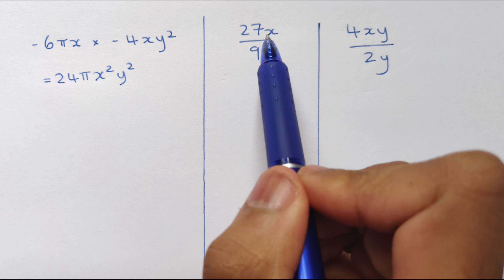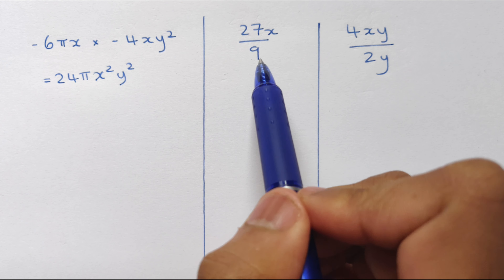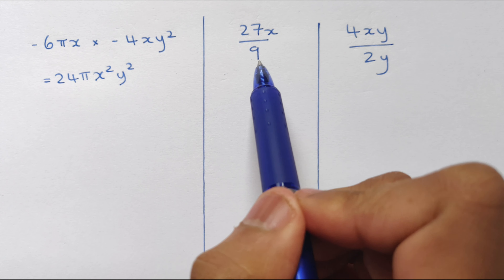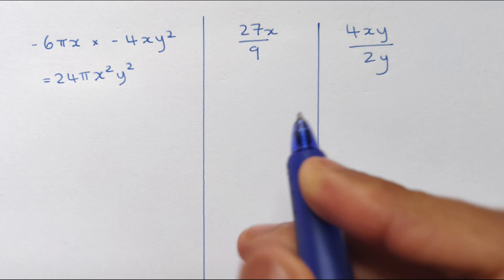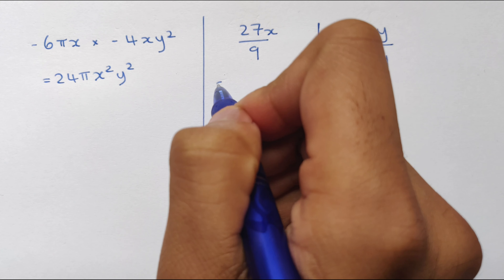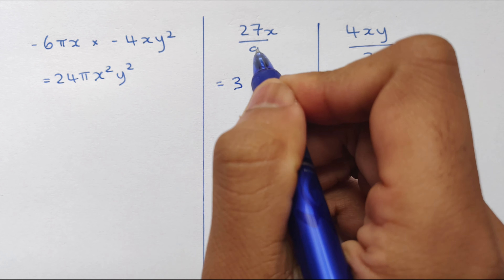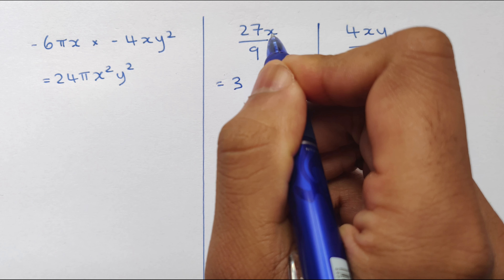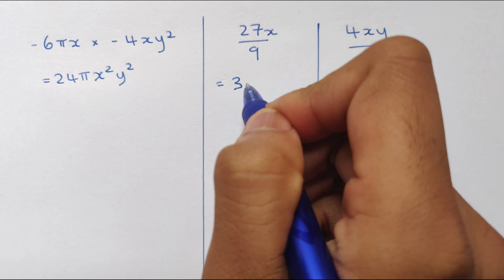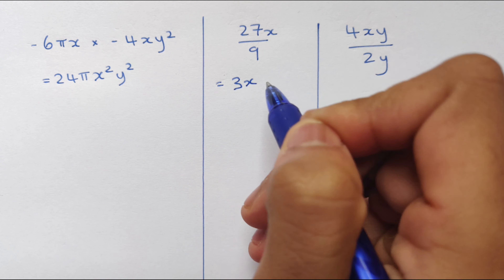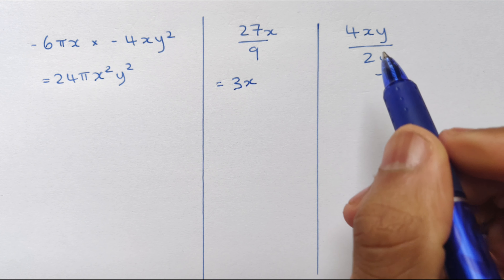Next example: 27x divided by 9. So 27 divided by 9 is 3, and we're left with 3x.